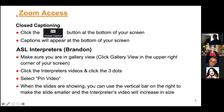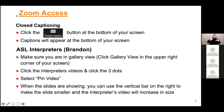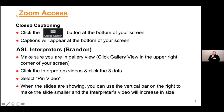Some Zoom accessibility tips: we have closed captioning. If you click on the closed caption icon at the bottom of the screen, captions will appear. Brandon is our ASL interpreter today. Make sure you're in gallery view in the upper right-hand corner of your screen. Click on the interpreter's video and click the three dots — you can select 'pin video' at that time.